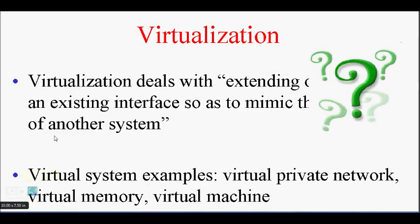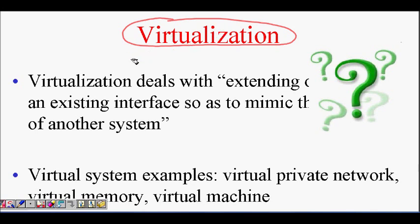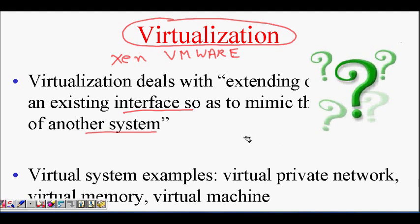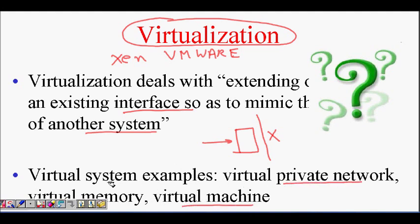In this lecture we are going to learn about virtualization, a very hot topic in operating systems today. You hear about Xen, VMware, and so on — everyone is in the race to win the virtualization business. Virtualization means something that is virtual: something different but looking virtually like something else. It deals with extending an existing interface so as to mimic another system, providing one interface through which the user sees the system as something different. Virtual system examples include virtual private networks, virtual machines, and virtual memory.